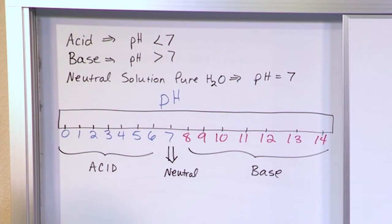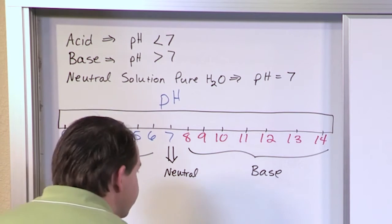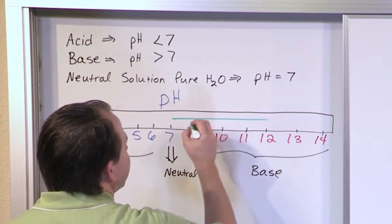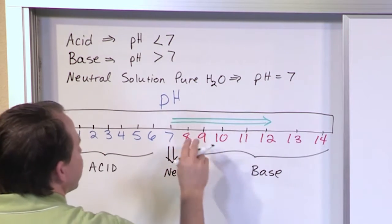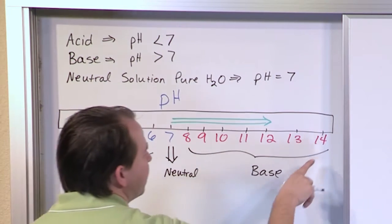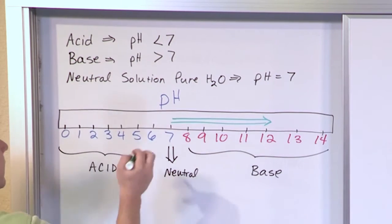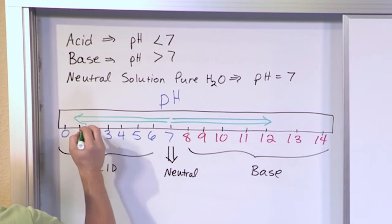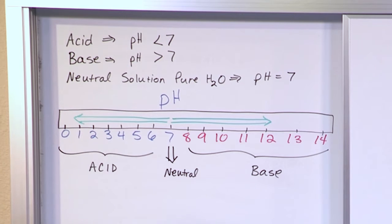I'll draw some little arrows here. The farther you get away from 7, which is neutral, you have stronger bases going this direction. The strongest base you can have is a pH of 14. And the farther away you get from 7 going this direction, the stronger the acid you have.